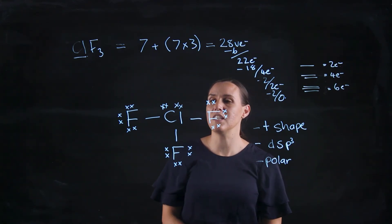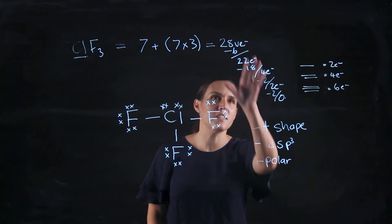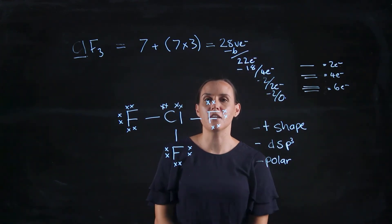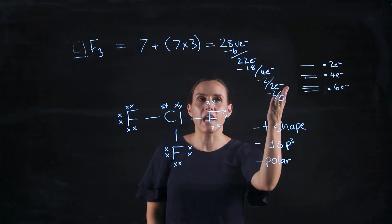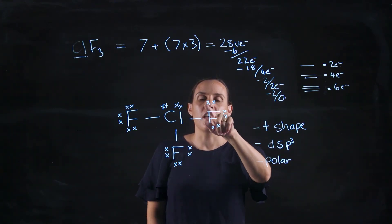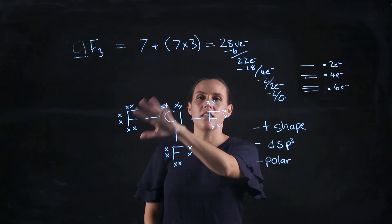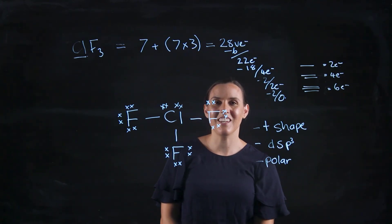So follow the procedure. Total electrons, be that person that keeps a little tally on the side so you don't make an error and grab your calculator out so you don't make an error and fill the outside atoms and then work your way into that central atom. Thank you.